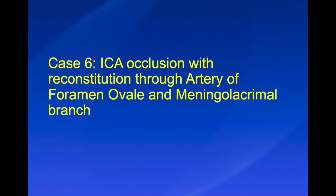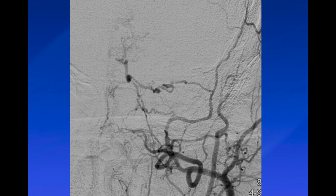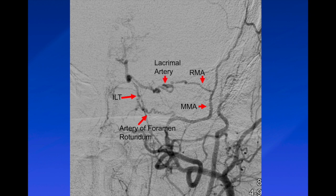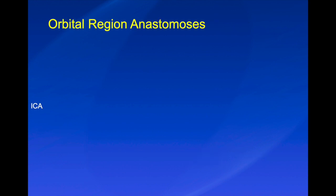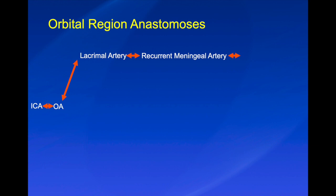Another case of ICA occlusion shows reconstitution through the artery of the foramen ovale as well as the meningolacrimal branch. On ECA injection, the artery of the foramen rotundum connects to the ILT, and the middle meningeal artery connects with the recurrent meningeal artery, lacrimal artery, ophthalmic artery, and then the ICA. The pathway is: ICA to ILT anterolateral branch to artery of foramen rotundum to IMAX, and the orbital anastomosis: ICA to ophthalmic artery to lacrimal artery to recurrent meningeal artery to MMA.